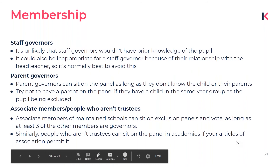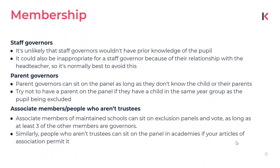There aren't statutory rules preventing specific governors from sitting on the panel, but some really shouldn't if possible. Staff governors will likely have prior knowledge of the pupil and may be uncomfortable making a decision that goes against the headteacher. Parent governors can normally sit on the panel as long as they don't know the child and don't have a child in the same year group. Associate members can sit on an exclusions panel as long as there are three other governor members in maintained schools. Academies should check their articles of association.